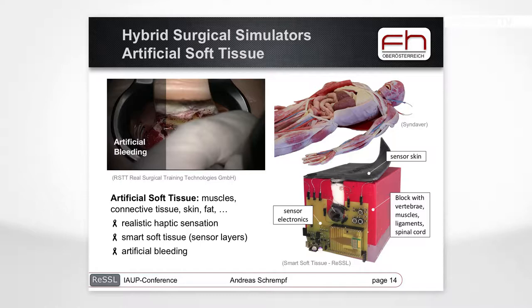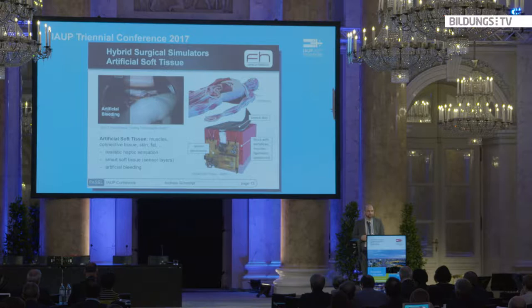We also have soft tissue, muscles, and connective tissue to develop. One impressive example is from the company Zindeva, which develops whole-body anatomy using artificial soft and hard tissue. It's important to provide a very realistic visual appearance, but equally important is that the haptics are also realistic.